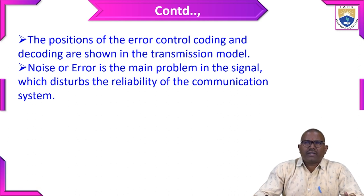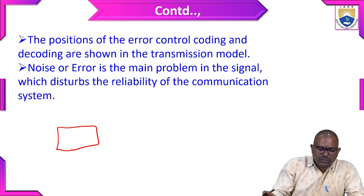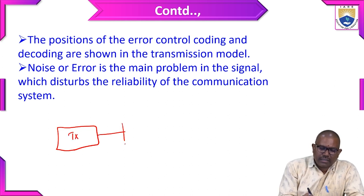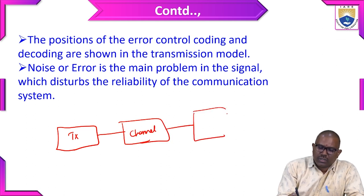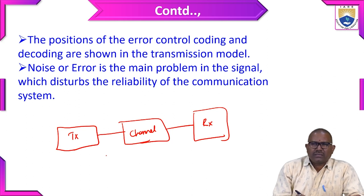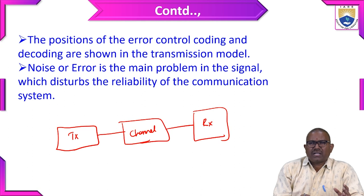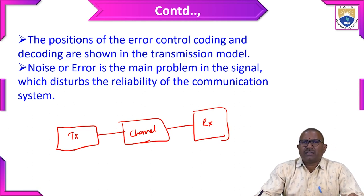The position of error control coding and decoding is shown in the transmission model. Noise or error is the main problem in the signal which disturbs the reliability of the communication system. The transmission model has a transmitter, a channel, and a receiver. In the transmitter we use a modulator to increase the signal frequency and generate it into the channel. In error control coding, channel encoding is also done before entering the channel, whereas in the receiver the reverse decoding operation is performed.